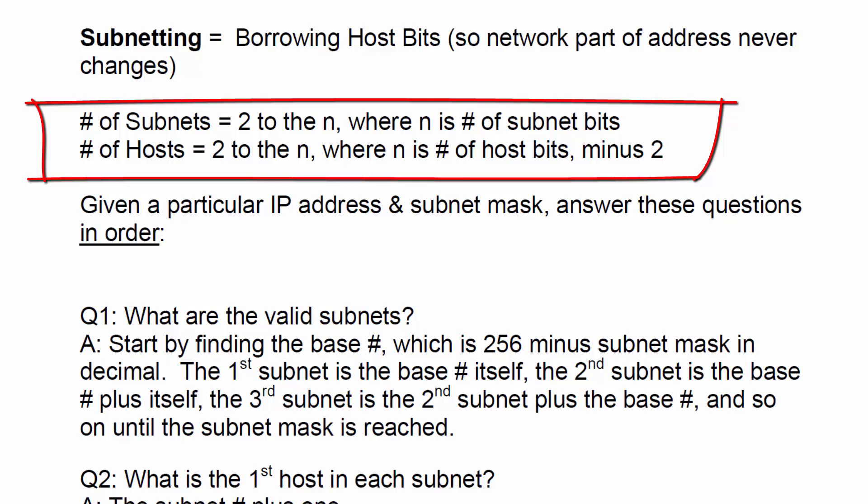The reason it's minus 2 is that this is usable hosts. So, the 255 host is not usable and the 000 host is not usable. That's your broadcast and your network numbers. That's why it's minus 2.